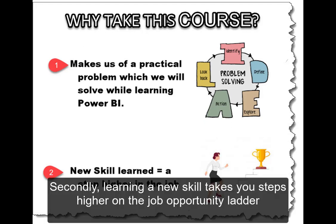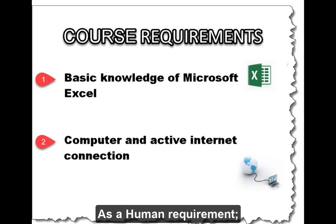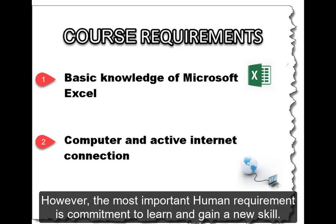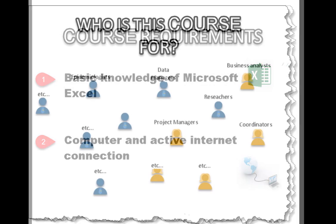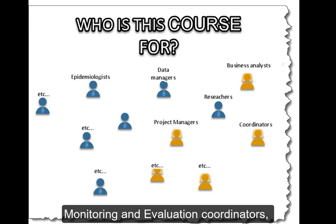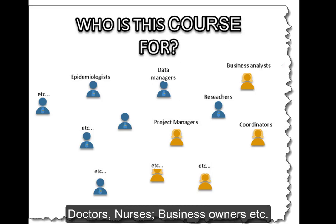Secondly, learning a new skill takes you steps higher on the job opportunity ladder. As a human requirement, basic knowledge of Microsoft Excel will permit you to grasp most of the concepts easily. However, the most important human requirement is commitment to learn and gain a new skill. For material requirements, a computer and an active internet connection is a must. The scope is large: epidemiologists, data managers, monitoring and evaluation coordinators, researchers, survey designers, doctors, nurses, business owners, etc.